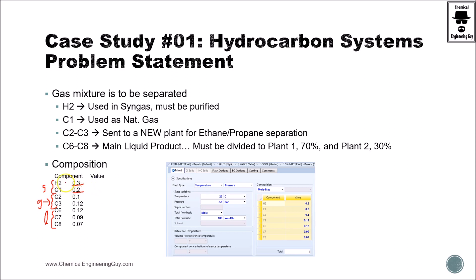C1 stands for a hydrocarbon of one carbon alone. C2 stands for two carbons, which is ethane, then propane, and so on.